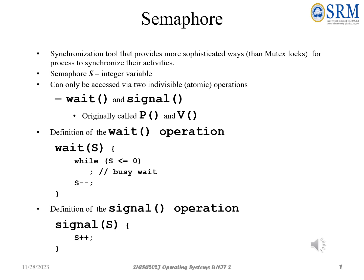Here we have two atomic operations: one is wait, the other one is signal. For the wait operation, while S is less than or equal to 0, we perform S minus minus. When S is less than or equal to 0, meaning that if it is true the process will not enter into the critical section. If this is false, then the process enters into the critical section, and S minus minus, decrementing the value of S.